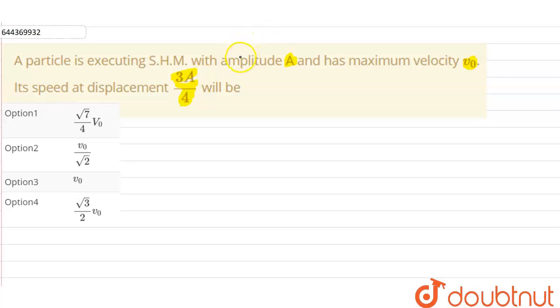In the given question we have been given that a particle is executing SHM with amplitude of A and has the maximum velocity as V0. We have to find the speed of the particle which is executing SHM at a displacement of 3A by 4.